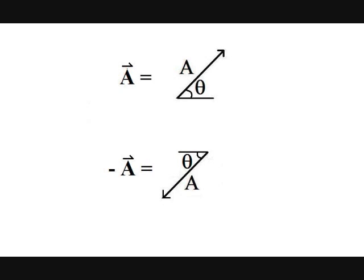So negative 1 times vector A is simply A in the opposite direction. You can draw that by pointing the head where the tail was and the tail where the head was. Negative 3 times A is simply a vector 3 times as long as A in the opposite direction as A.